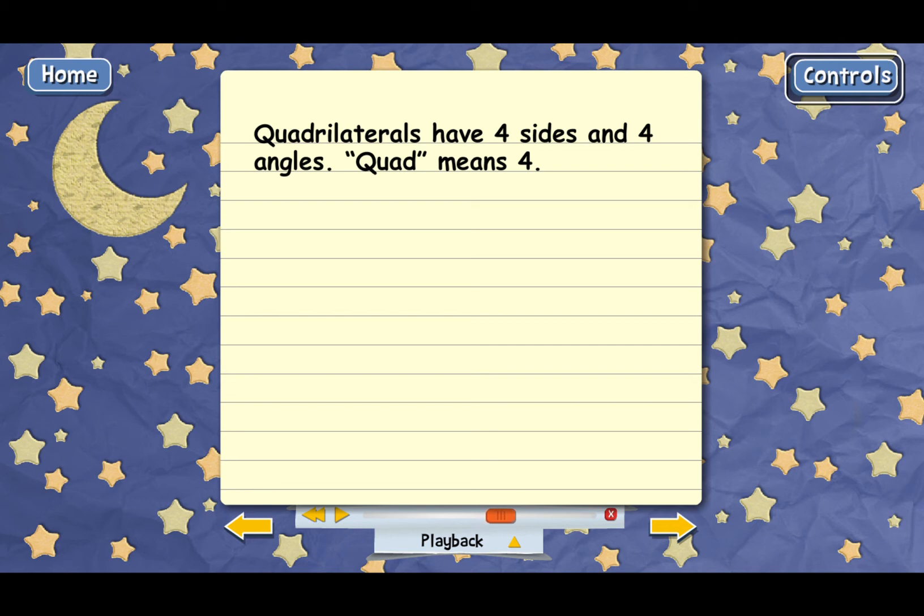Here's an example of a quadrilateral. You can see this figure has four sides. There's side AB, side BC, side CD, and side AD. And there are also four angles. There's angle A, angle B, angle C, and angle D.